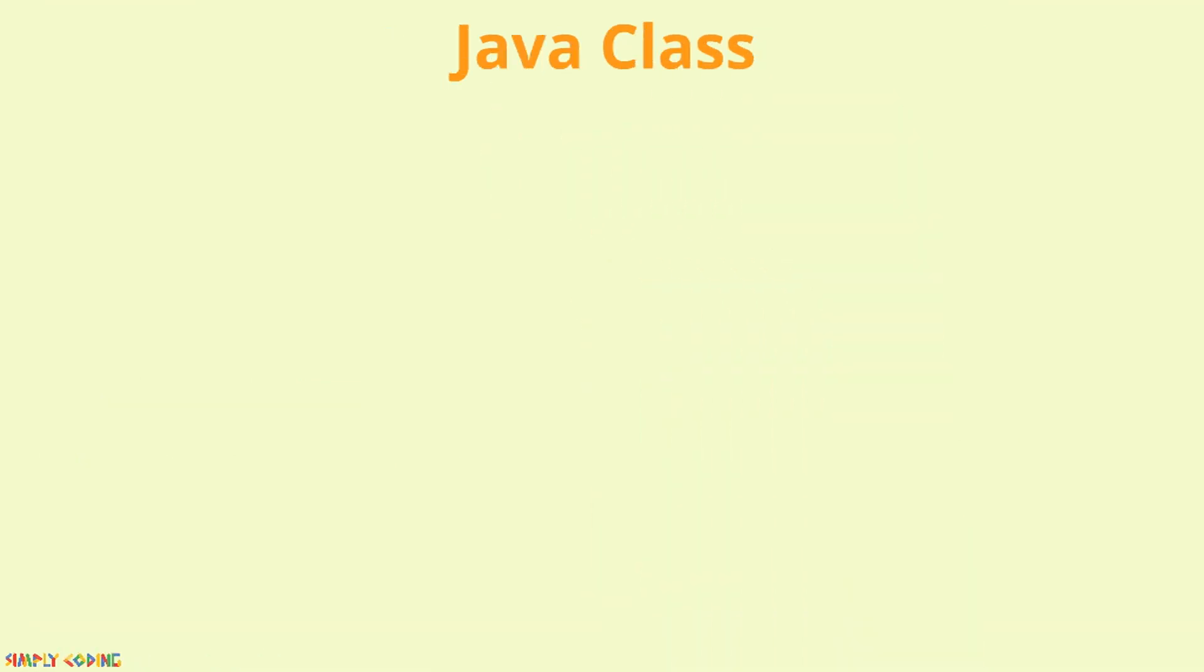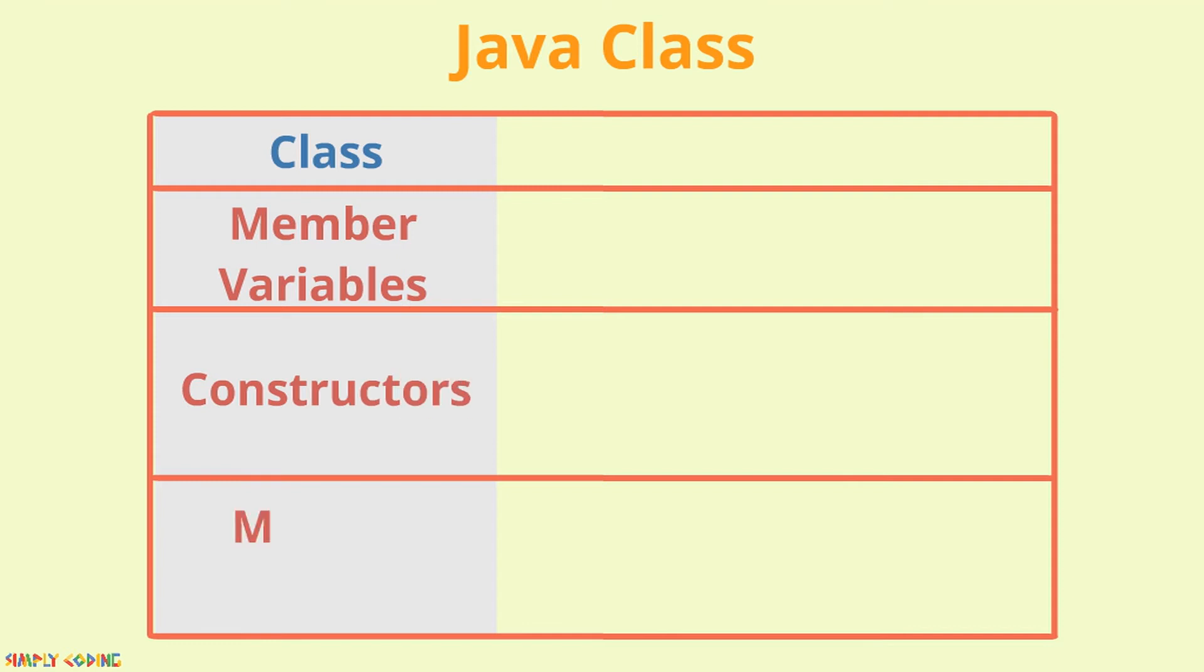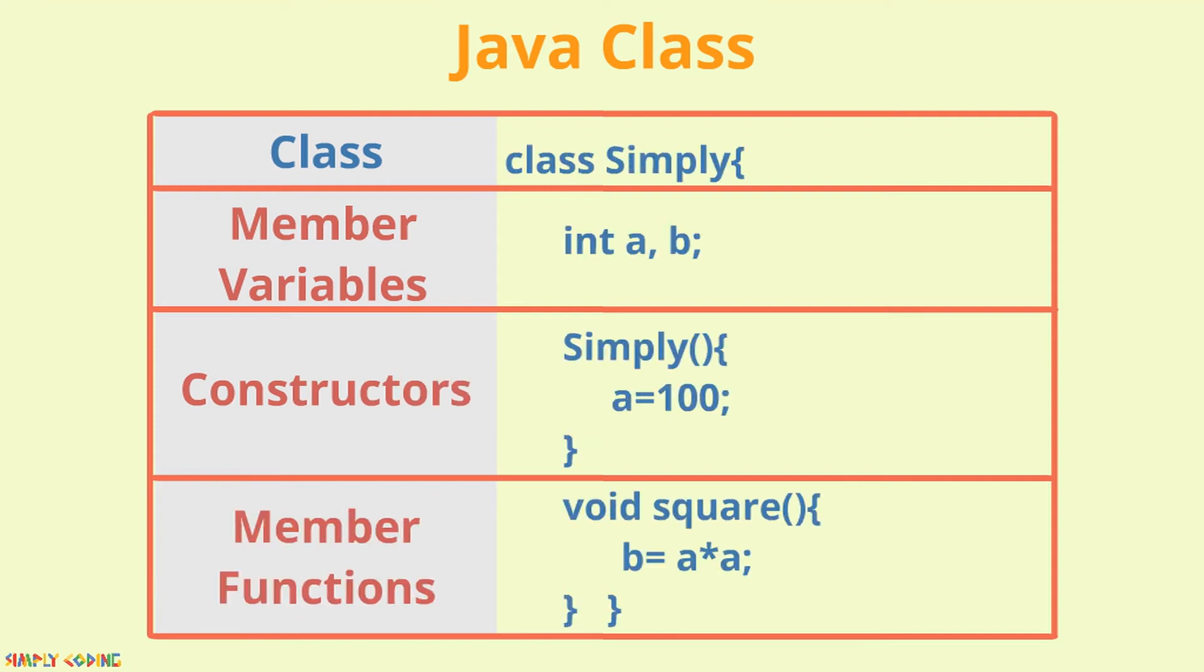So a Java class has member variables, constructors, and member functions. Let's look at this with an example here. Here we have a class with some member variables, constructors, and member functions.